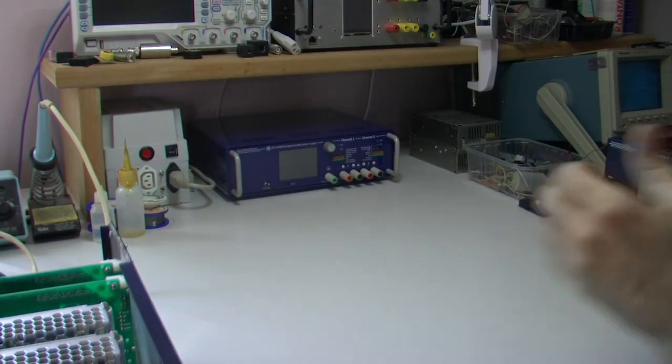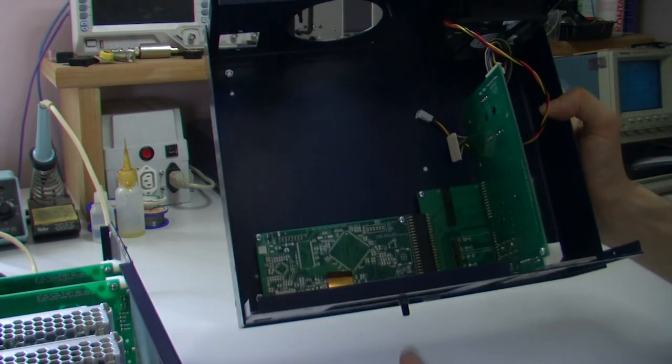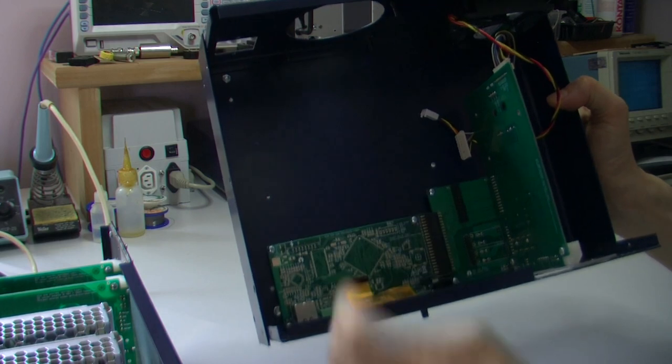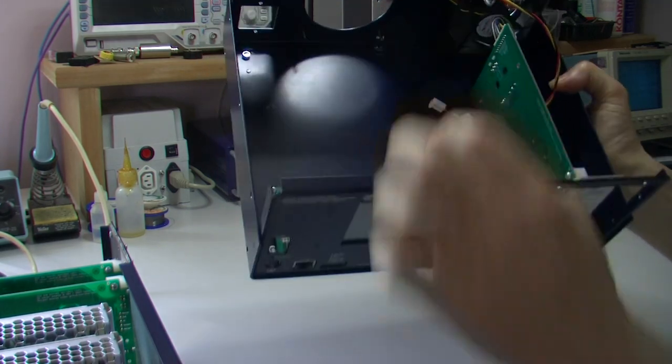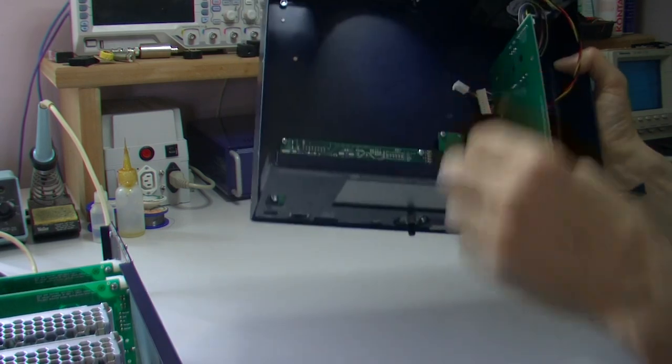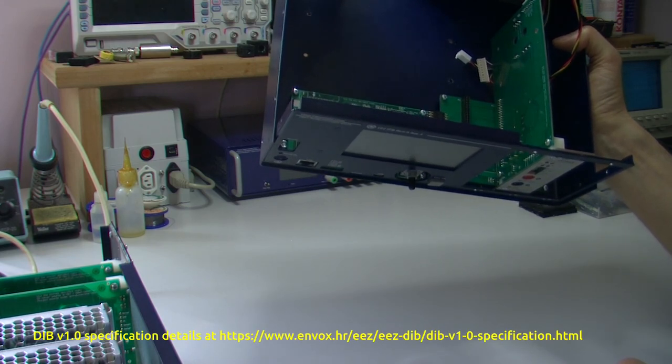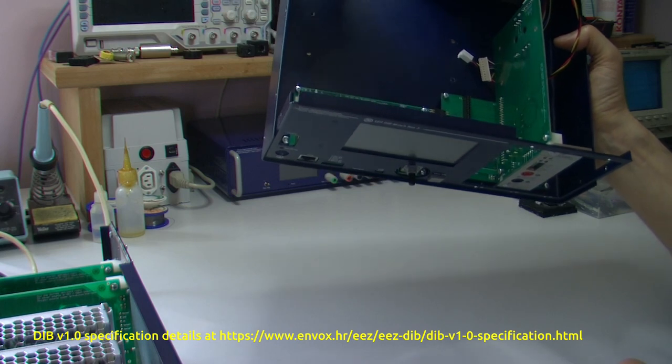If we look here how it looks like. So this is an MCU board and all that stuff is already on it. And we have here a small backplane which is built based on DIB version 1.0 specification.